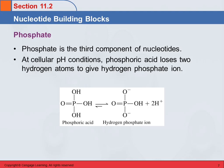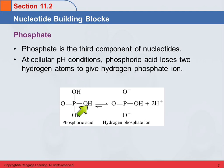The other part of the nucleotide is the phosphate. Here's phosphoric acid. This is a triprotic acid — it has three acidic hydrogens. At cellular pH conditions, it loses two of those and becomes a hydrogen phosphate ion.